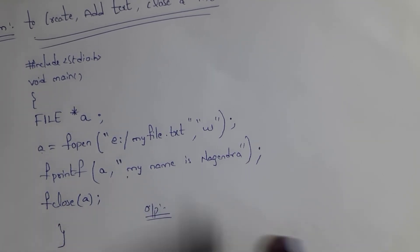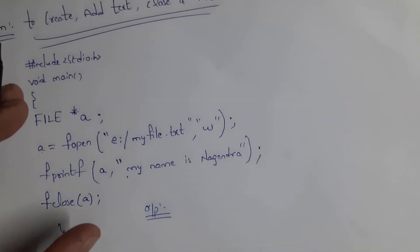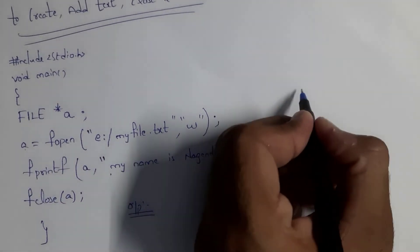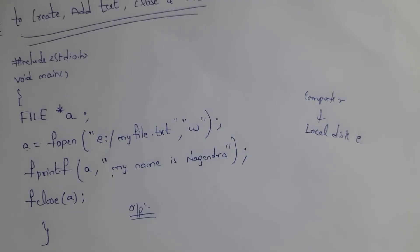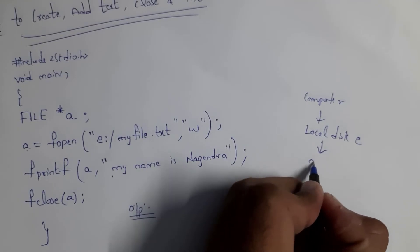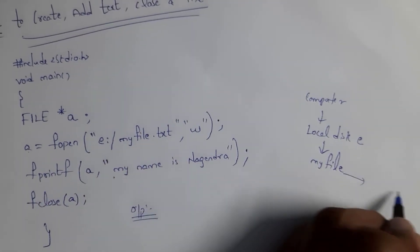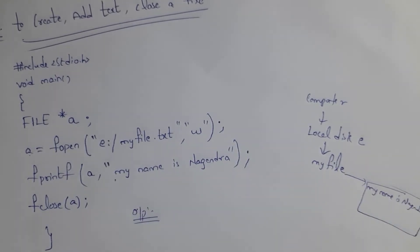When you run this program, you will not get any output on screen. But it will create the file in local disk E. After executing the program, open your computer and navigate to local disk E — you will see a file named 'myfile'. If you open that file, you will see the text 'my name is Nagendra'. This is how we create a file using C programming.